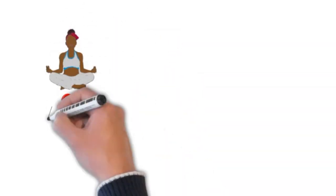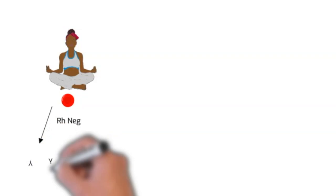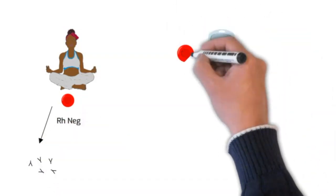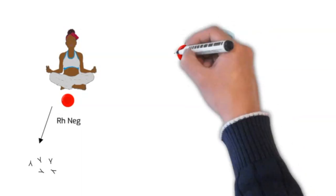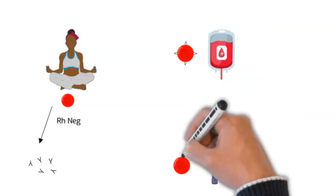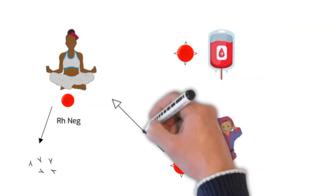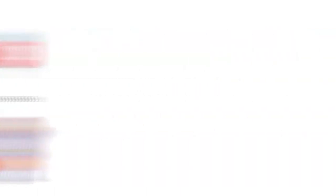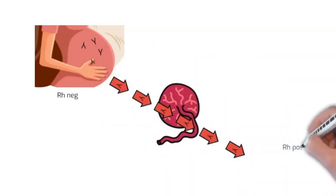RH negative mothers can be sensitized if exposed to RH positive red blood cells and can produce antibodies. This happens in two main situations. The first one is after blood transfusion of an RH positive blood and the second one is during pregnancy with an RH positive baby. Those antibodies can cross the placenta and cause complications during pregnancy.